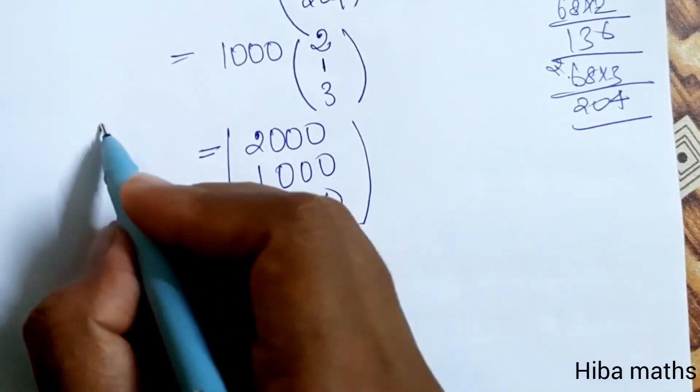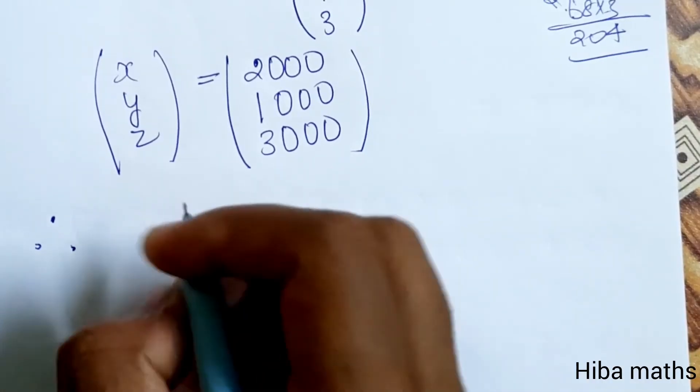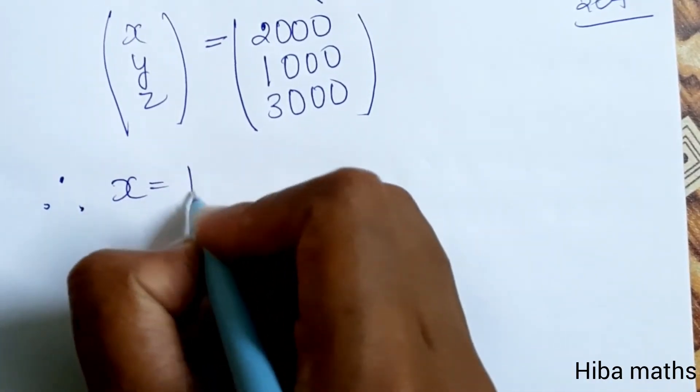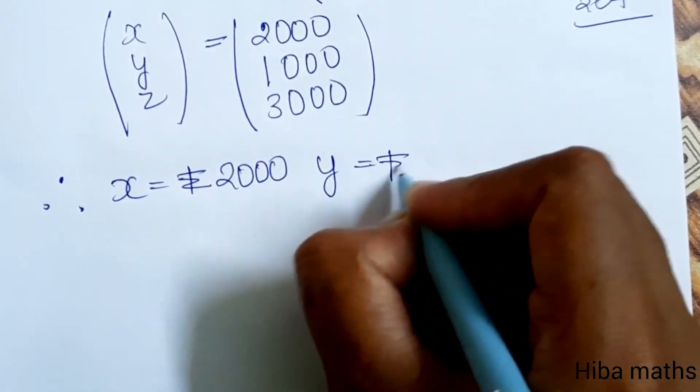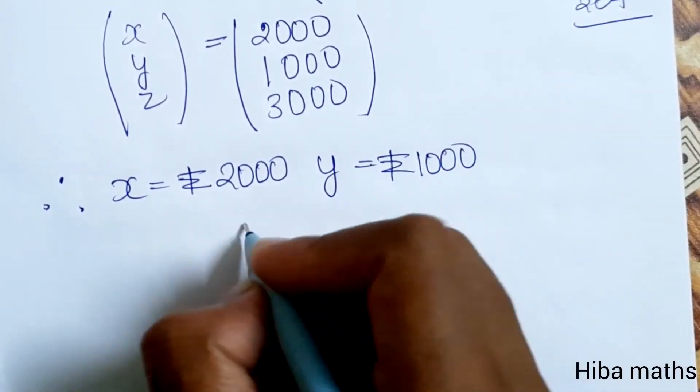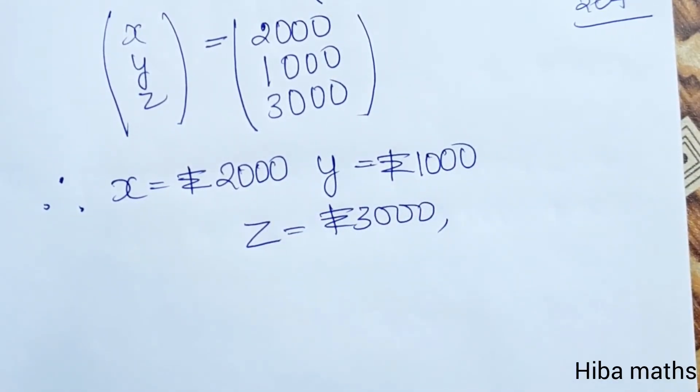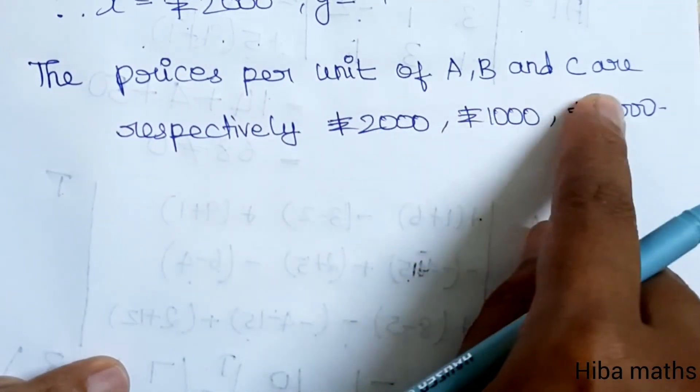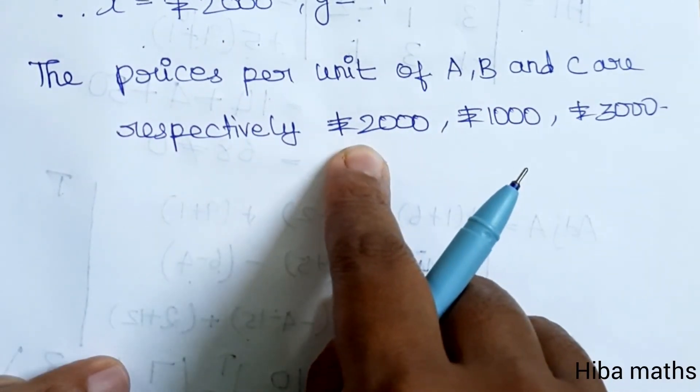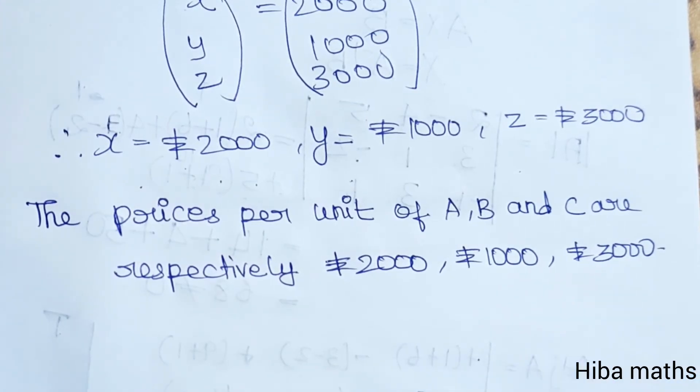Therefore X equals rupees 2000, Y equals rupees 1000, and Z equals rupees 3000. So the prices per unit of A, B, and C are respectively rupees 2000, rupees 1000, and rupees 3000. Thank you so much for watching.